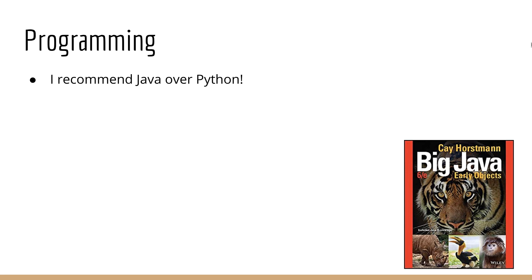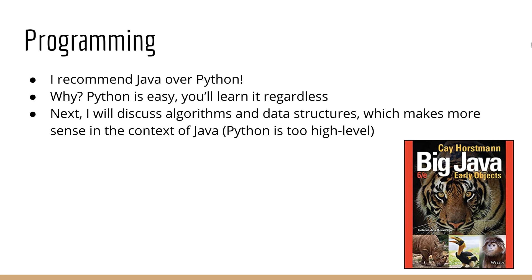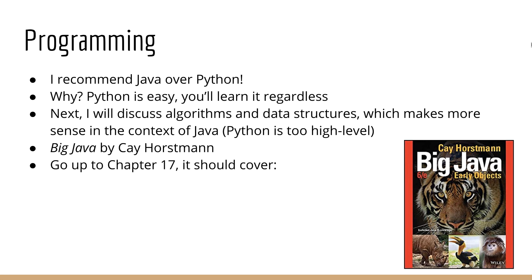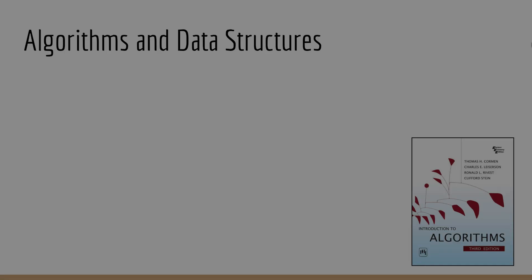For programming, this may surprise you, but I do not recommend Python. Python is a language that's pretty easy to learn, so it's likely you will pick it up yourself regardless. Instead, I actually recommend learning Java. The reason I recommend Java over Python is because the next topic is algorithms and data structures. In order for that topic to make any sense, you'll want to be familiar with the low-level operations that are common in Java but not so much in Python. Python is so high-level that it often hides these details from you. For programming, I recommend the book Big Java by Horstmann. You can skip many of the chapters — basically you want to learn about classes, objects, data types, arrays, strings, recursion, and basic data structures. My recommendation would be everything up to chapter 17 on trees, which brings you to just over half the book.